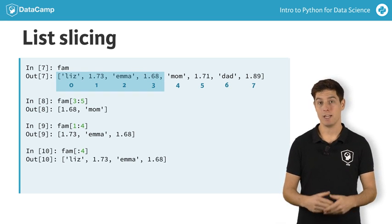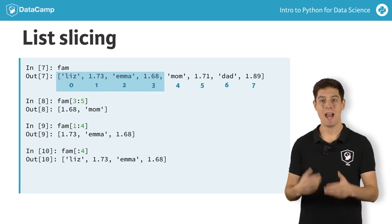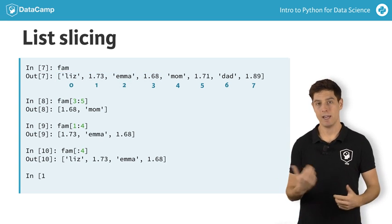If you leave out the index where the slice should end, you include all elements up to and including the last element in the list, like here.